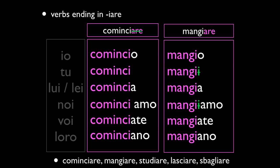Let's take a look at MANGIARE. You chop off the ARE and start to conjugate it — same thing as before, you just don't have to double that I. Drop that off and there's your correct conjugation: MANGIO, MANGI, MANGIA, MANGIAMO, MANGIATE, MANGIANO.